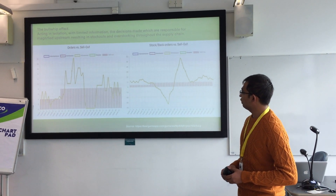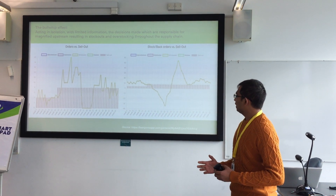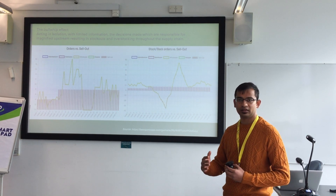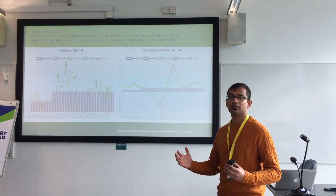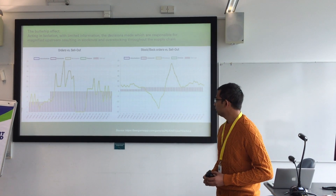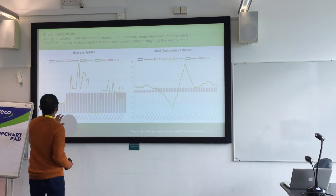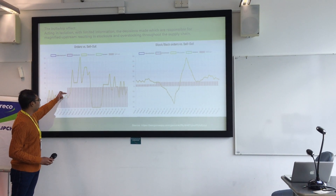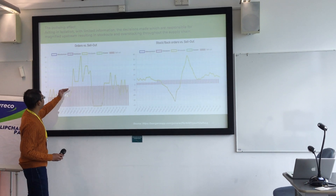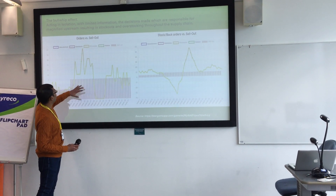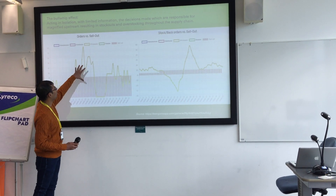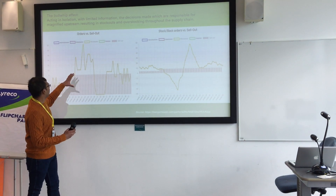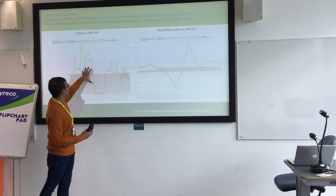Now, how should the bullwhip effect be addressed? The bullwhip effect is nothing but amplifications — the variations in demand while proceeding through the supply chain flow. You can see that there is steady demand, and if the demand increases without any pre-alerts, our supply chain flow suddenly increases. This amplification, also called the bullwhip effect, should be controlled.